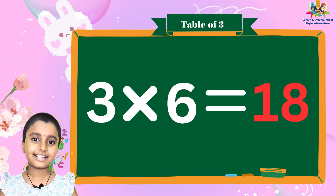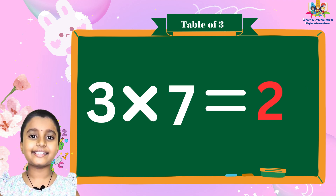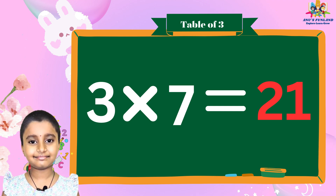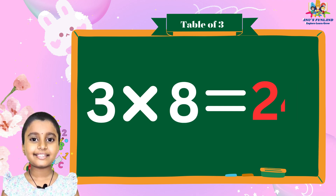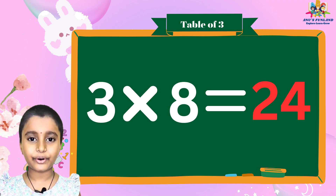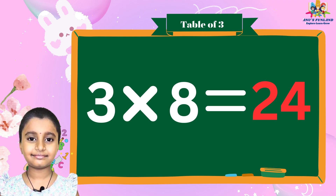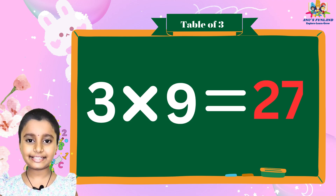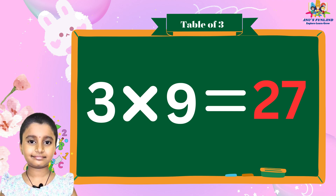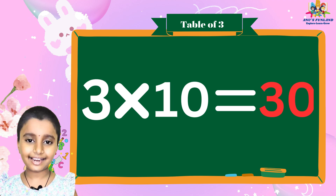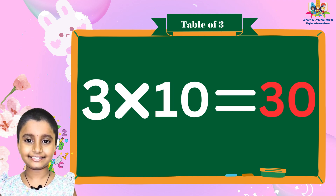3 7's are 21, 3 8's are 24, 3 9's are 27, 3 10's are 30.